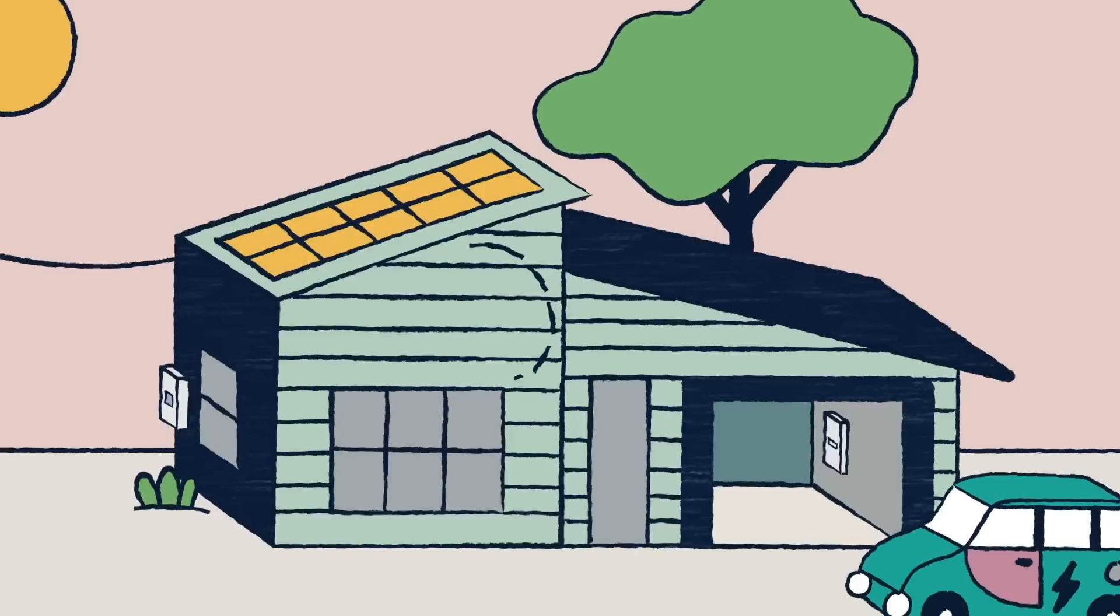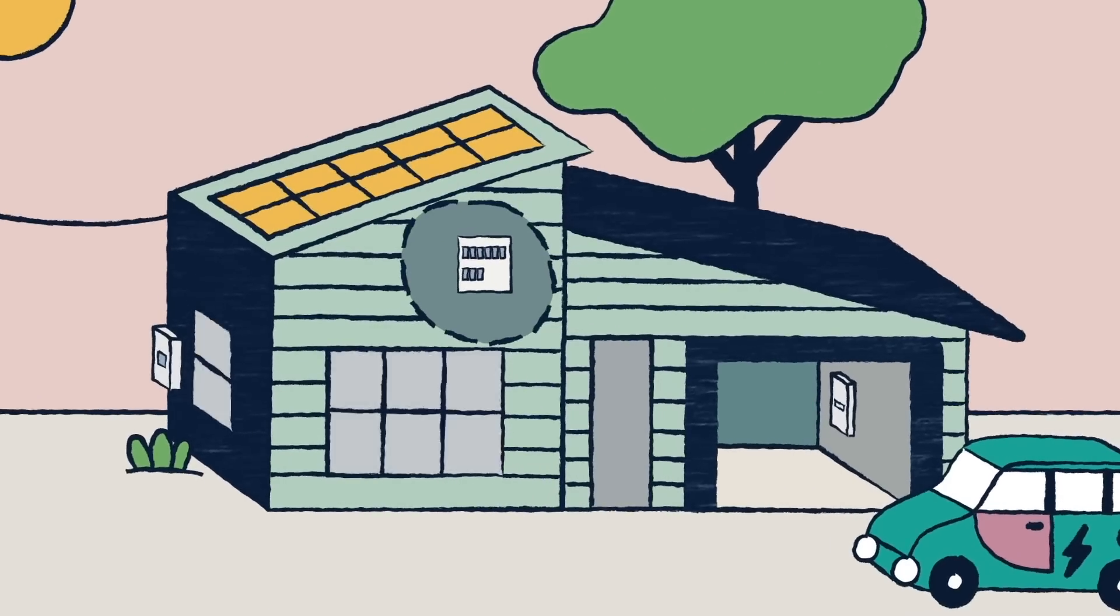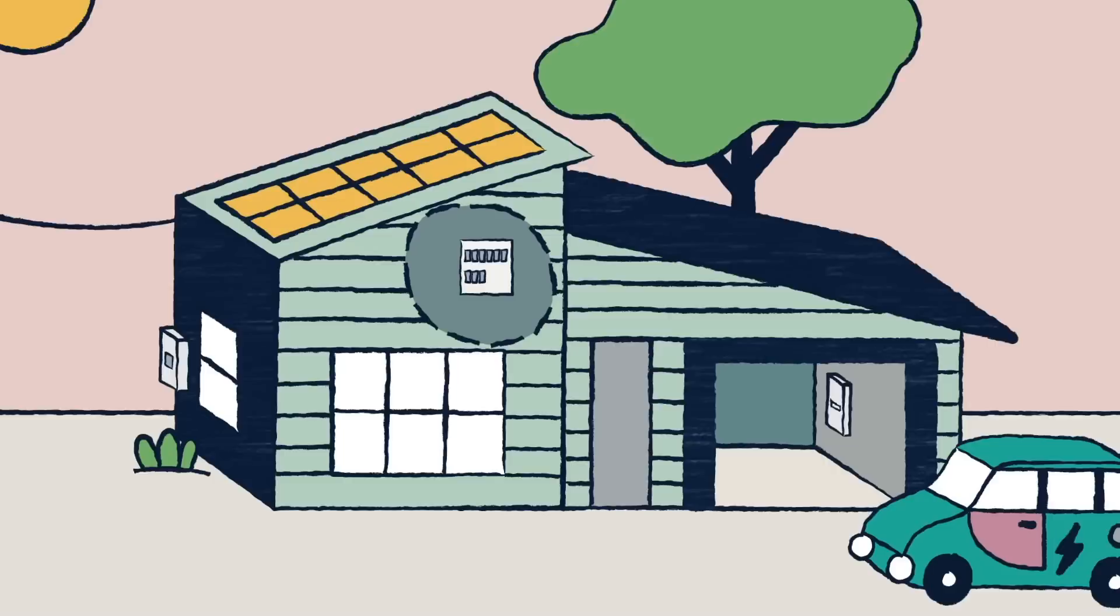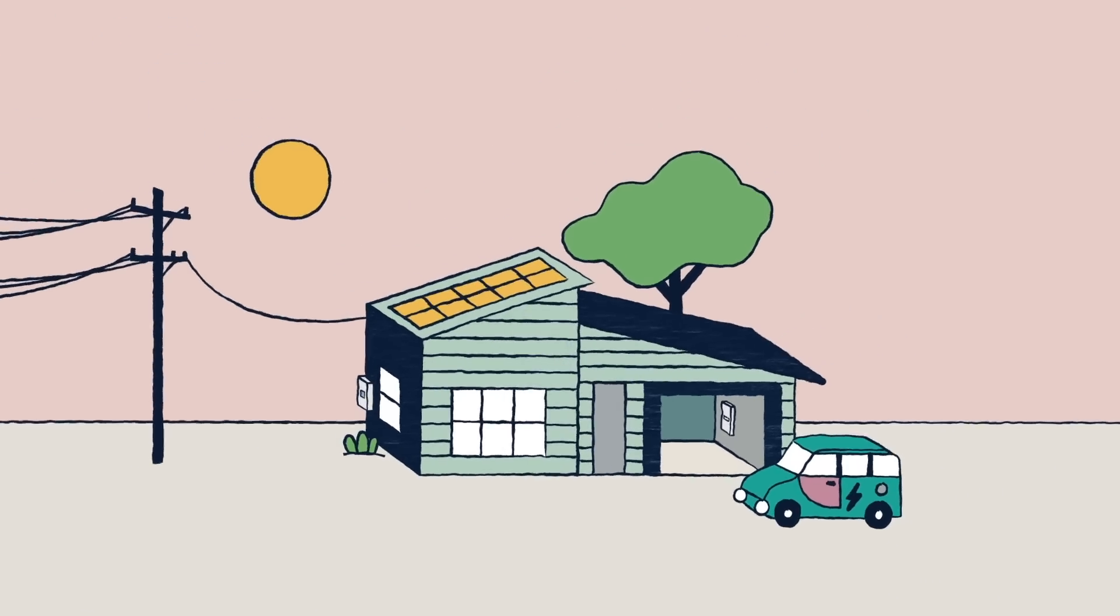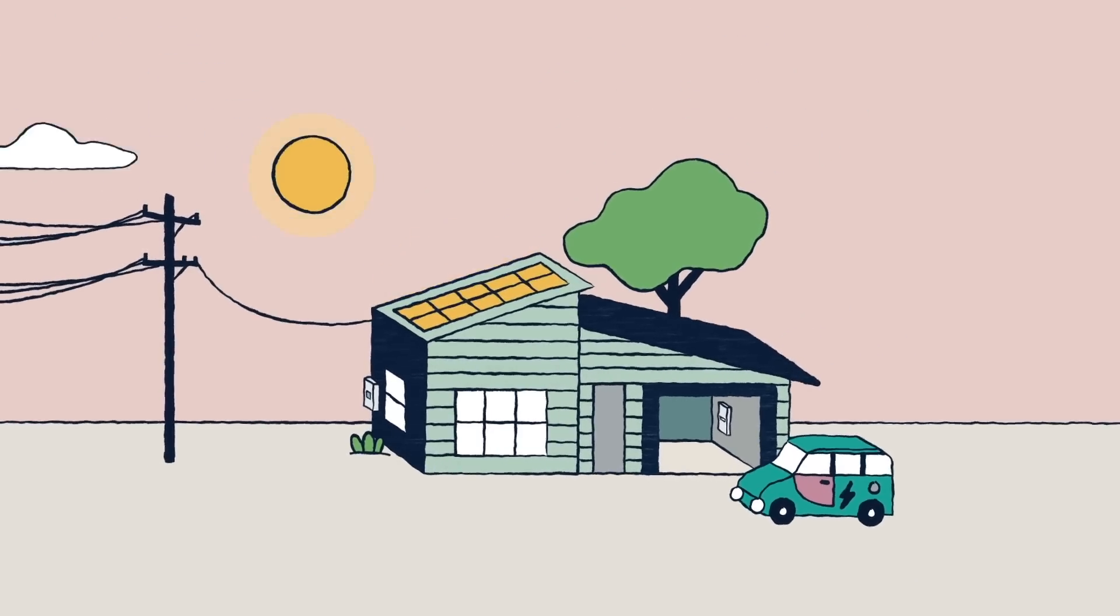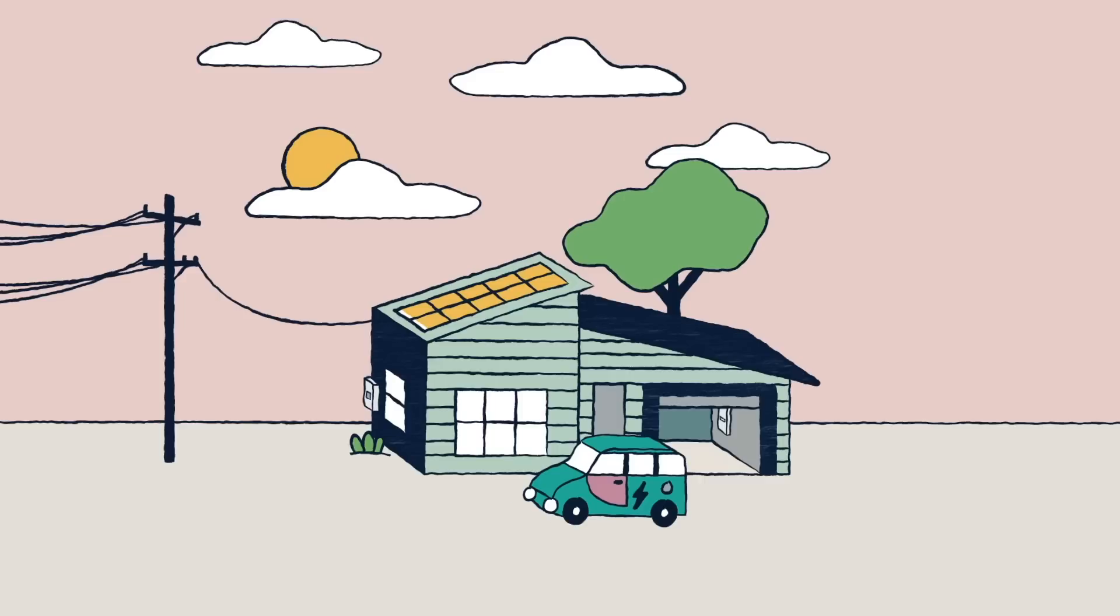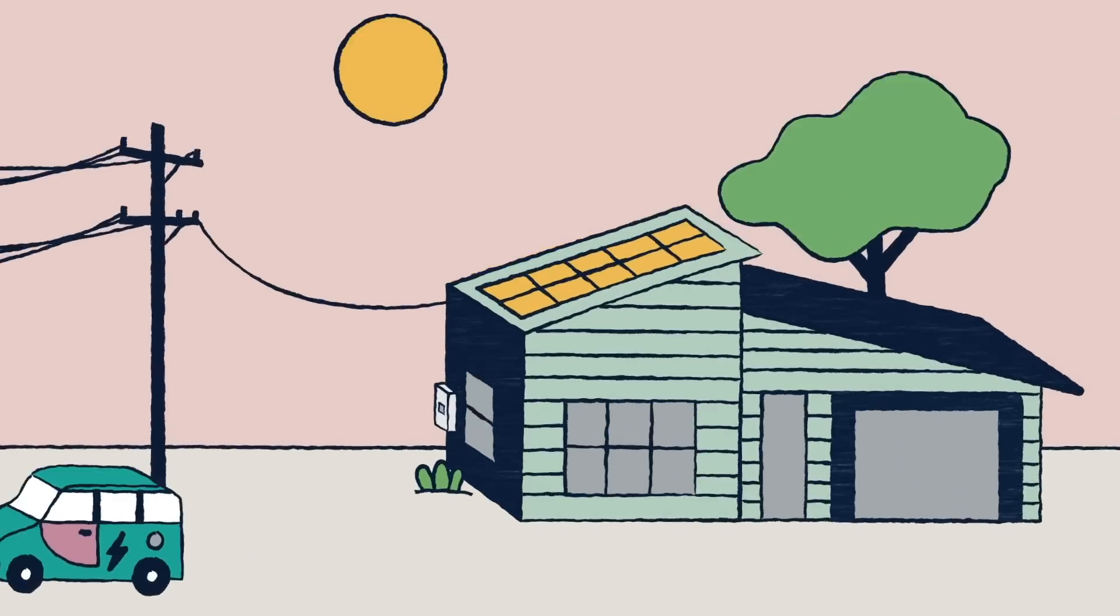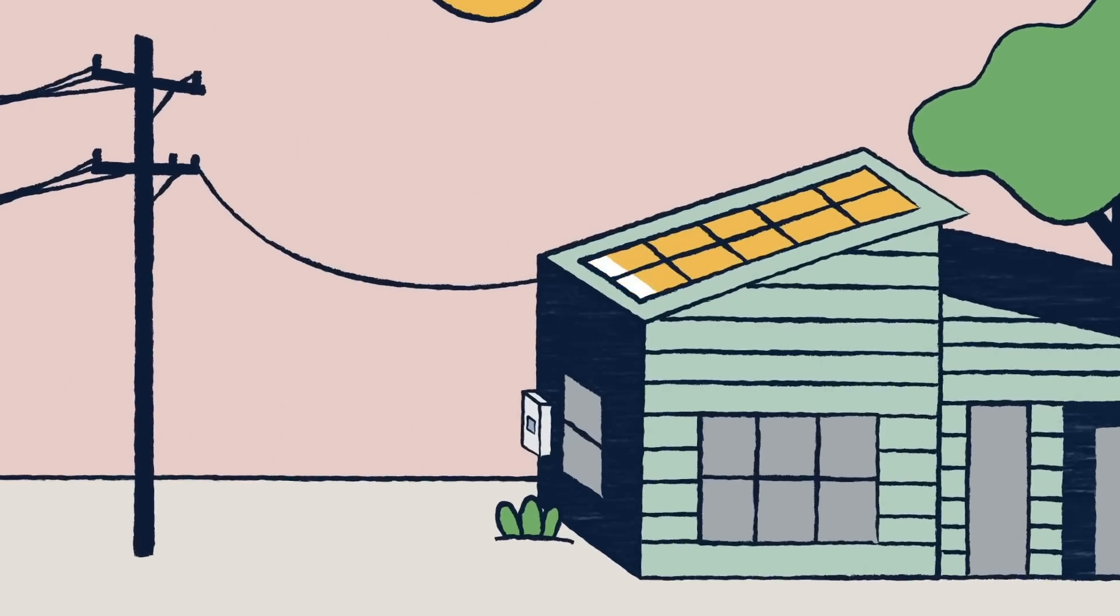From here, it flows into your switchboard, where it's redirected throughout your home through your existing electrical wiring. The panels work during daylight hours, even if it's cloudy or overcast, and any excess power that you don't use gets sold back to the grid.